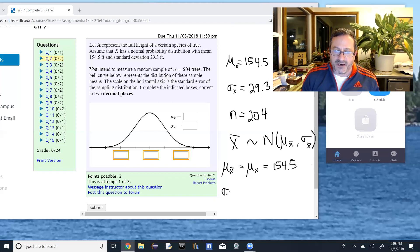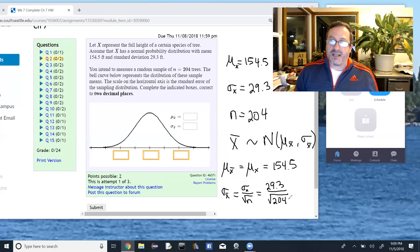The sigma X bar, so again, it's a little subscript, it's the standard deviation of the distribution of the sample means. So each sample of 204 trees has its own mean and standard deviation. And the mean of these guys is sigma X divided by the square root of N. So in this case, that's the 29.3 divided by the square root of 204. Okay, so how does that relate to that problem? Well, these two values would be what goes in these first two boxes.